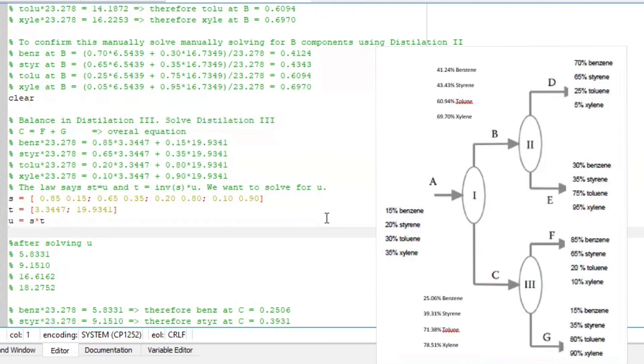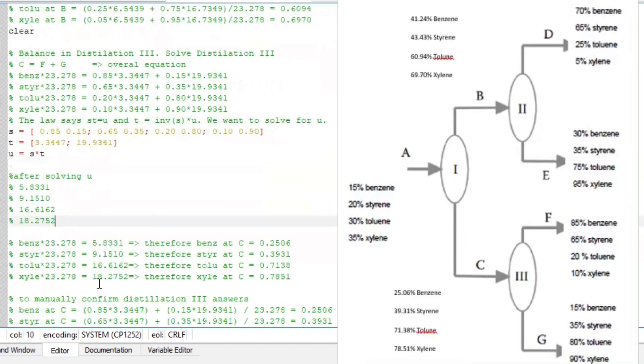Do the same formula for the third distillation column to solve for the C compositions, and you will find your unknowns. And then you have to find the actual compositions of the unknowns in your C.